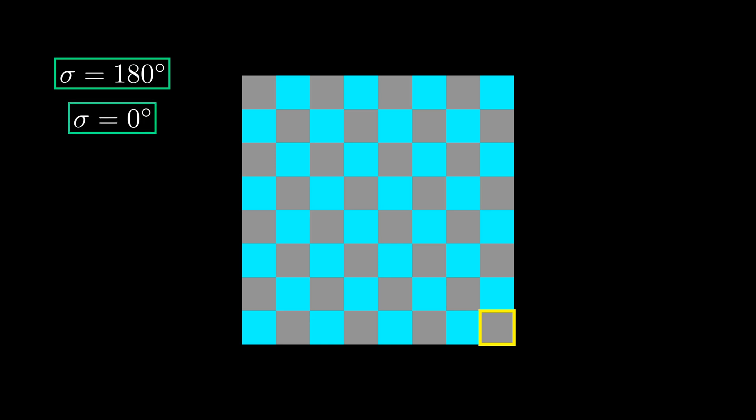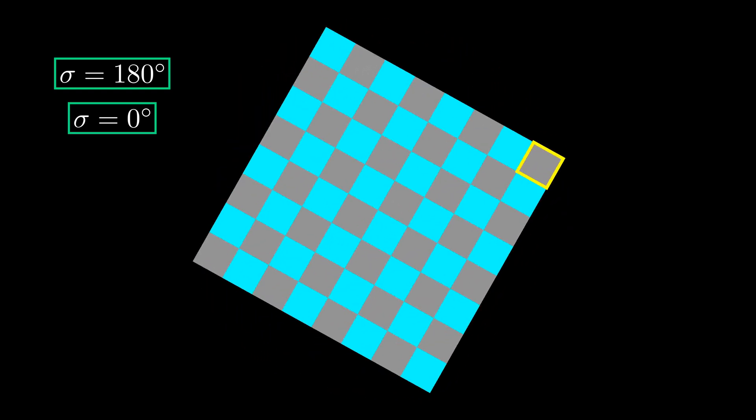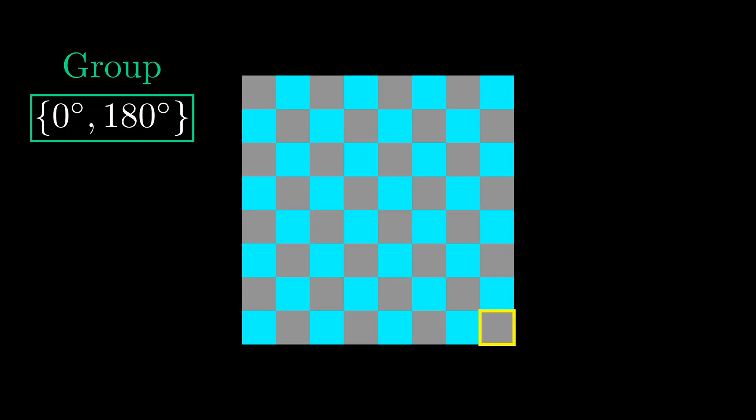Of course, you can also rotate by any integer multiple of 180 degrees. But any of these rotations will always just be equivalent to either doing nothing, or to rotating by 180. So the checkerboard has only two symmetries. And believe it or not, this small collection is already a group.